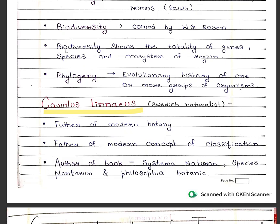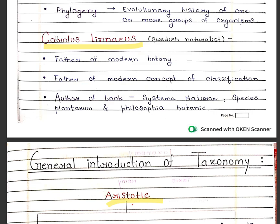Next we are going to discuss our next scientist, Carlos Linnaeus. He was a Swedish naturalist. He was also known as the father of modern botany, father of modern concept of classification, and author of the book Systema Naturae.